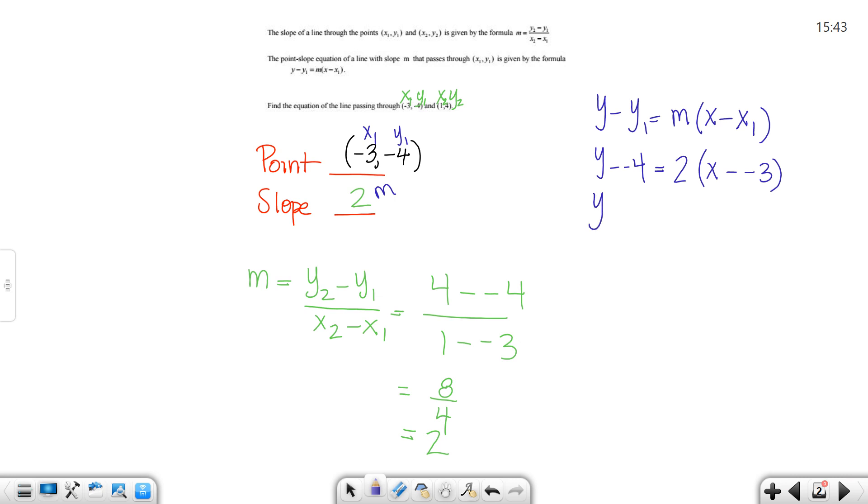So, you're going to have y plus 4 equals—sorry, that's a positive 2—y plus 4 equals 2 times x plus 3. Now, I always put my answer in slope-intercept form, so I'm going to solve it out and get y by itself. So, y plus 4 would equal 2x plus 6.